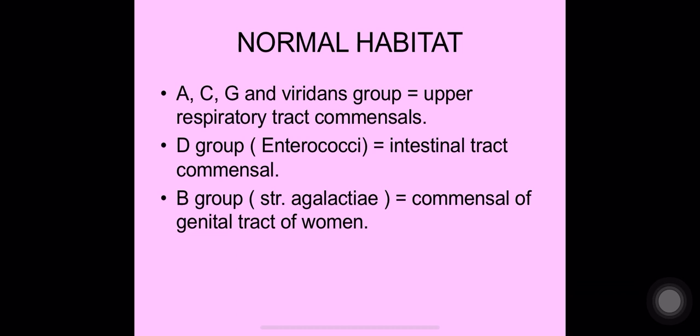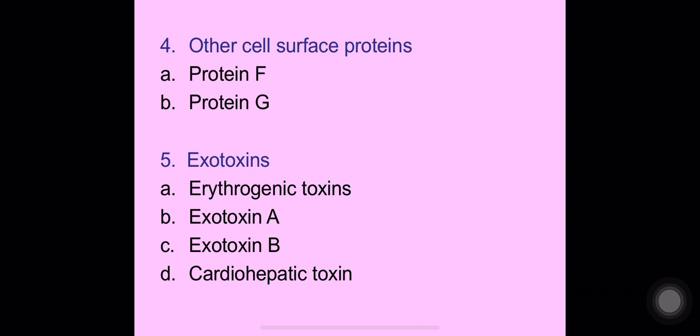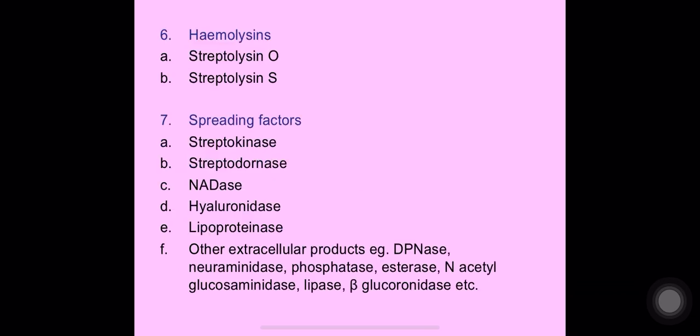The normal habitat of streptococci is the upper respiratory tract, intestinal tract, or skin, where they occur as commensals on skin and mucosal surfaces. Group A streptococcus — Streptococcus pyogenes — has various virulence factors: capsular hyaluronic acid, group-specific polysaccharide antigen, type-specific protein antigens (M, T, and R proteins), cell surface proteins like protein F and protein G, and exotoxins including exotoxin A and B, erythrogenic toxin, and cardiohepatic toxin, as well as hemolysins streptolysin O and S.